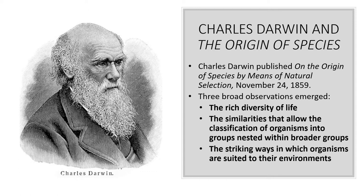The last main observation is that organisms are extremely well suited for their environment. If you go to the desert you see all these different types of adaptations that both plants and animals have that allow them to thrive in a very difficult environment. We can see how they have adapted to deal with things like water and sunlight. This is another really important observation that helped lead to Darwin's theory of evolution.